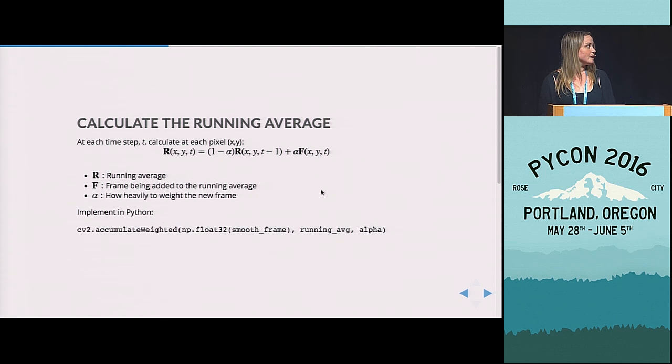So what we're doing is we're saying the running average at time T is part the prior running average and part this new frame F. And so it's really controlled by this parameter alpha. So if our alpha were say 0.2, then we would be taking 20% of the new frame, 80% of the prior running average and combining them to create the new running average.